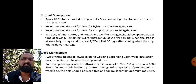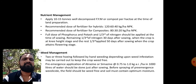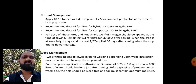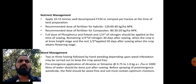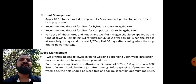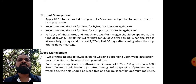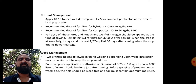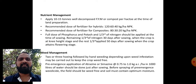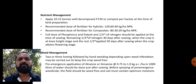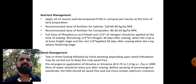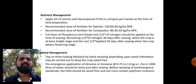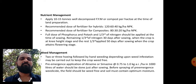Recommended dose of fertilizer for hybrid maize is 120:60:40 kg per hectare NPK, and for composites it is 80:30:20 kg per hectare NPK. Full dose of phosphorus and potash and one-third dose of nitrogen should be applied at the time of sowing as a basal dose. Remaining one-third nitrogen 30 days after sowing at knee-height stage, and the rest one-third nitrogen 15 days later when the crop attains flowering stage.